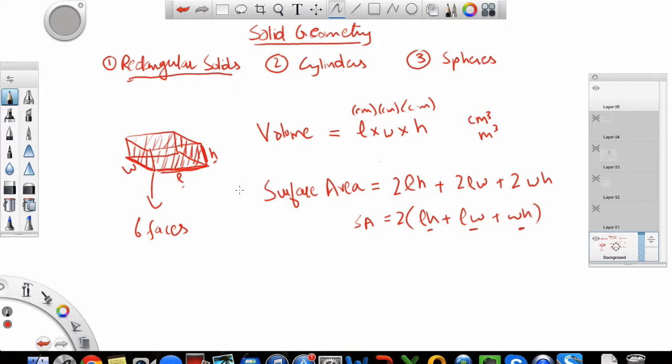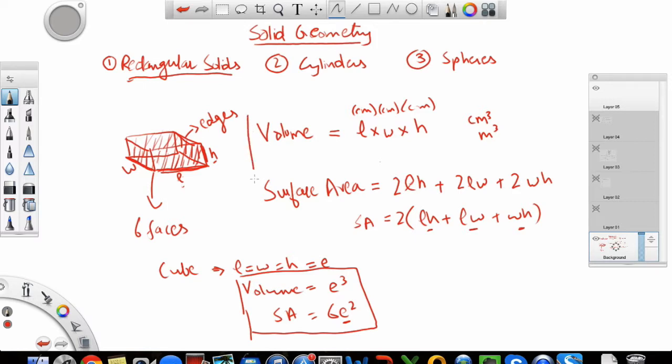Now there is a special type of rectangular solid which is known as a cube. So in a cube all the dimensions or also we call these sides as edges, all the edges are equal. So length is equal to width is equal to height. So in this case your volume just becomes, if I say all these are equal to let's say edge length e, then the volume just becomes e cube. And the surface area becomes 6 e squared. The area of each face would be e squared and you have six of these faces. So it is 6 e squared. So these are the formulas that you need to memorize for a rectangular solid. Your volume and your surface area.